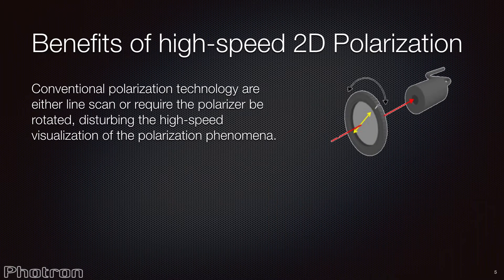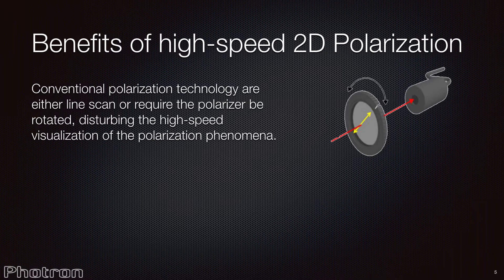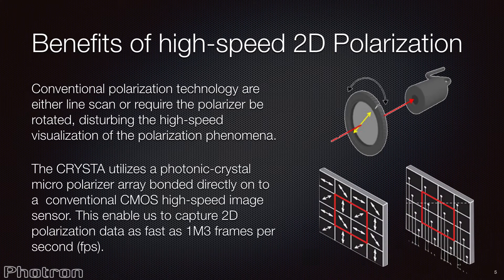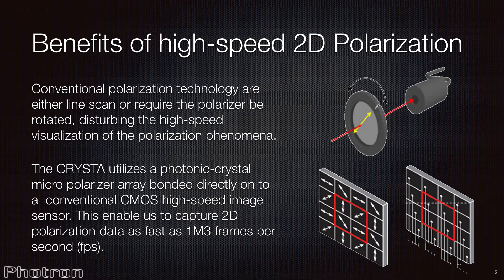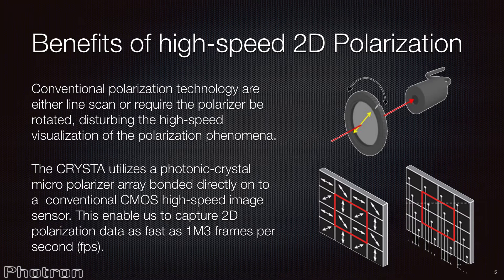What are the benefits of high-speed 2D polarization? Traditional polarization systems often utilize rotating or moving polarization filters, which prevents them from capturing full-field two-dimensional data. By bonding the photonic crystal polarizer directly to the high-speed camera sensor, with our pixels offset by 45 degrees from their immediate neighbors in groups of four, we can record high-speed two-dimensional polarization data at traditional high-speed framing rates with very short shutter times if required.